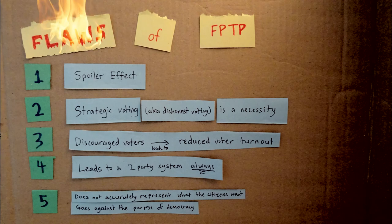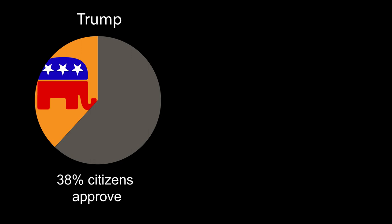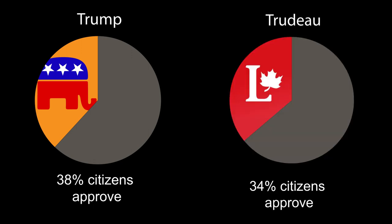For example, despite holding a majority in parliament, three-fifths of United States citizens are not okay with Trump being president — that's the majority of the population. And almost two-thirds of Canadians are not okay with Trudeau being prime minister. Do our leaders even represent what citizens want at all?